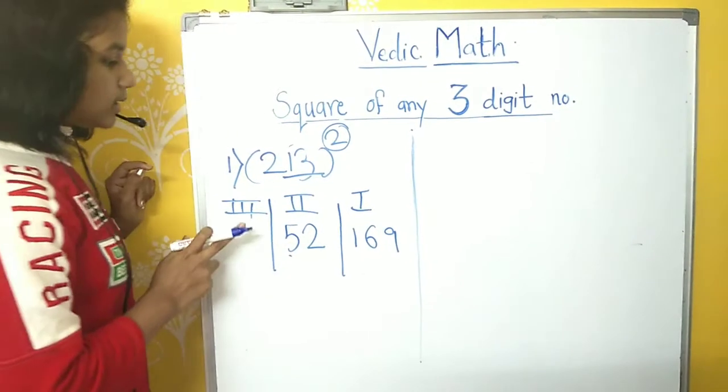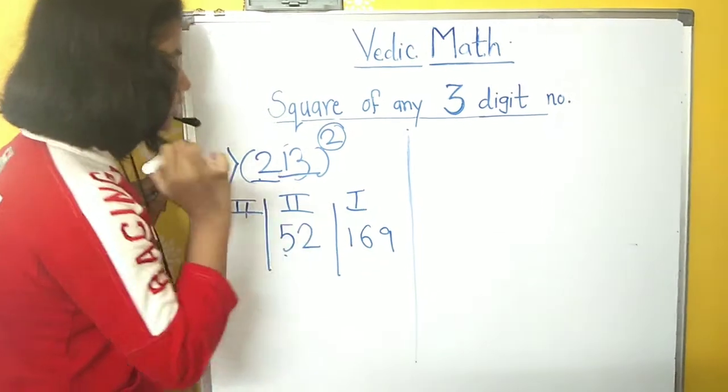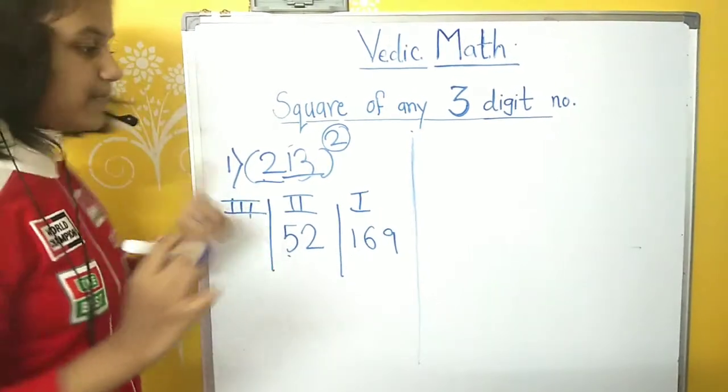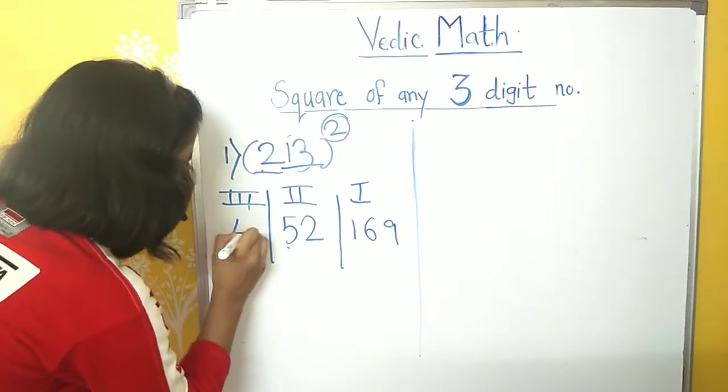Now, in the third step, we will square the number in the hundredths place, which will be 4.